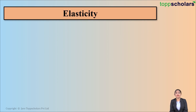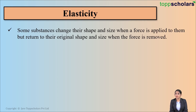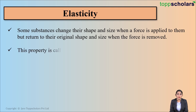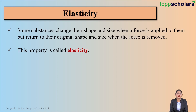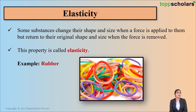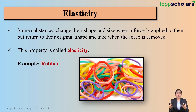The next property is elasticity. What do we mean by elasticity? Some substances change their shape and size when a force is applied to them, but they return to their original shape and size when the force is removed. This property is called elasticity. An excellent example is rubber — if you stretch a rubber band, its shape and size changes. But when you release it, removing the force, it returns to its original shape and size, which means rubber exhibits the property of elasticity.